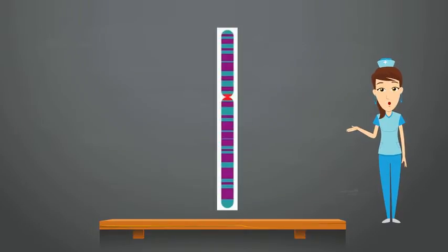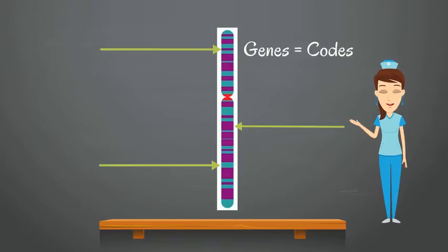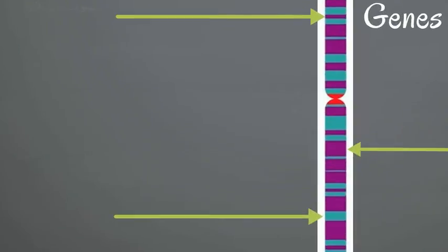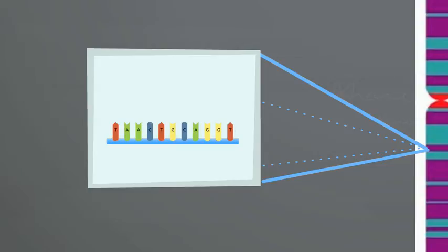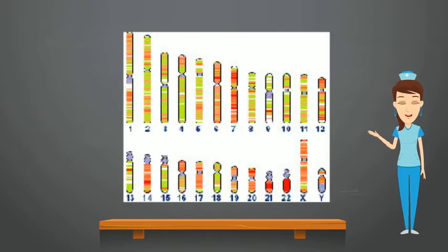On these chromosomes, there are certain genes. Genes are like codes that are passed on from parent to offspring. Each gene has a unique pattern. These patterns hold messages for the cells that tell them how to function.